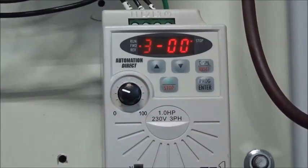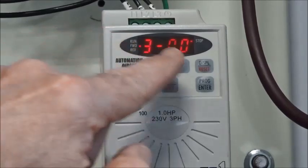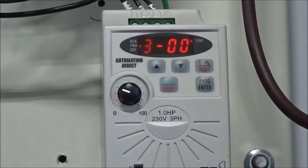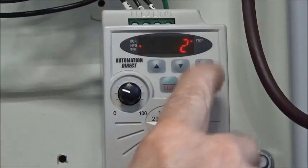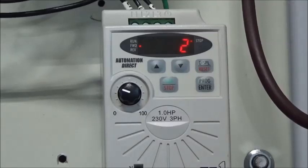And that brings up the double digit parameter number. This is program group number three, parameter 00. And if I want to see what that value is in that parameter, I hit program again. That gives me the value of two, which tells me that parameter group number three, parameter 00 is set for two.